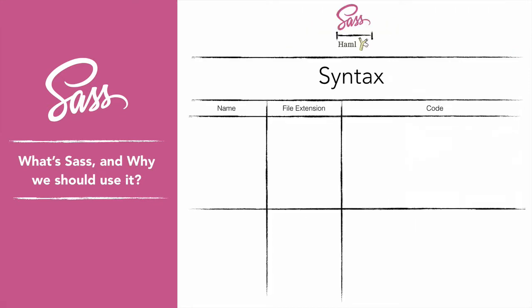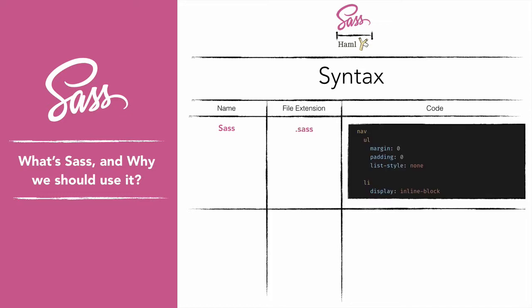Haml is considered the root of SASS, so we end up with an indented syntax similar to Haml that uses the .sass file extension. It uses indentation rather than braces to indicate nesting of selectors, and new lines rather than semicolons to separate properties.